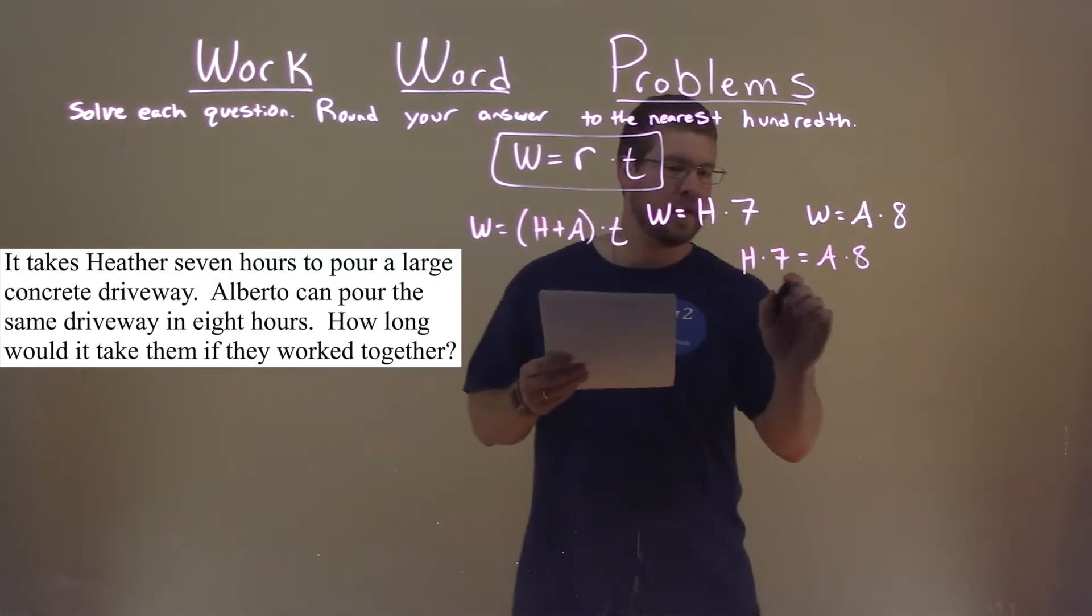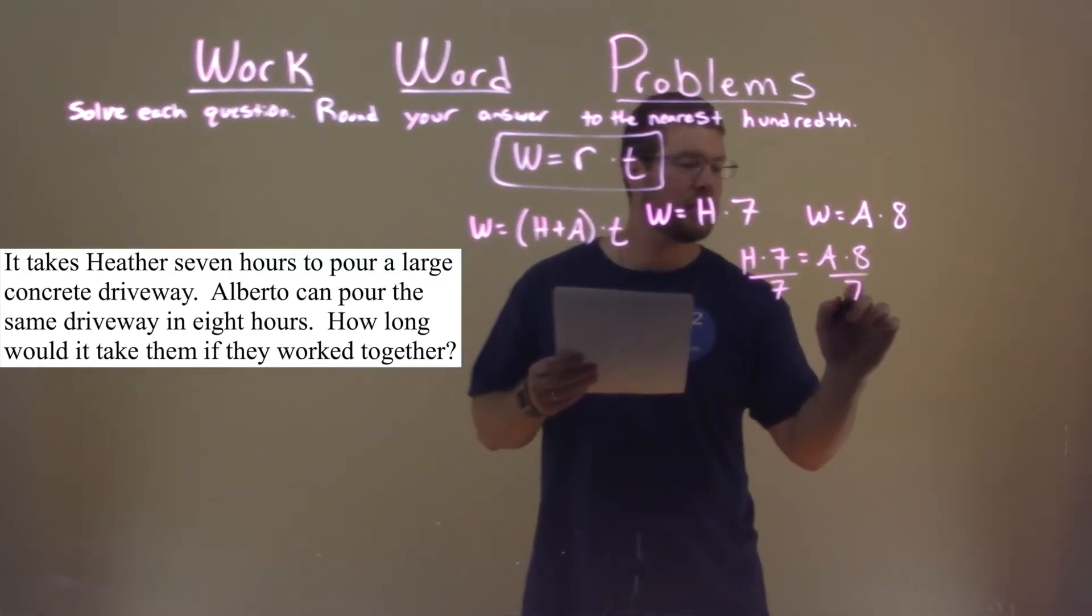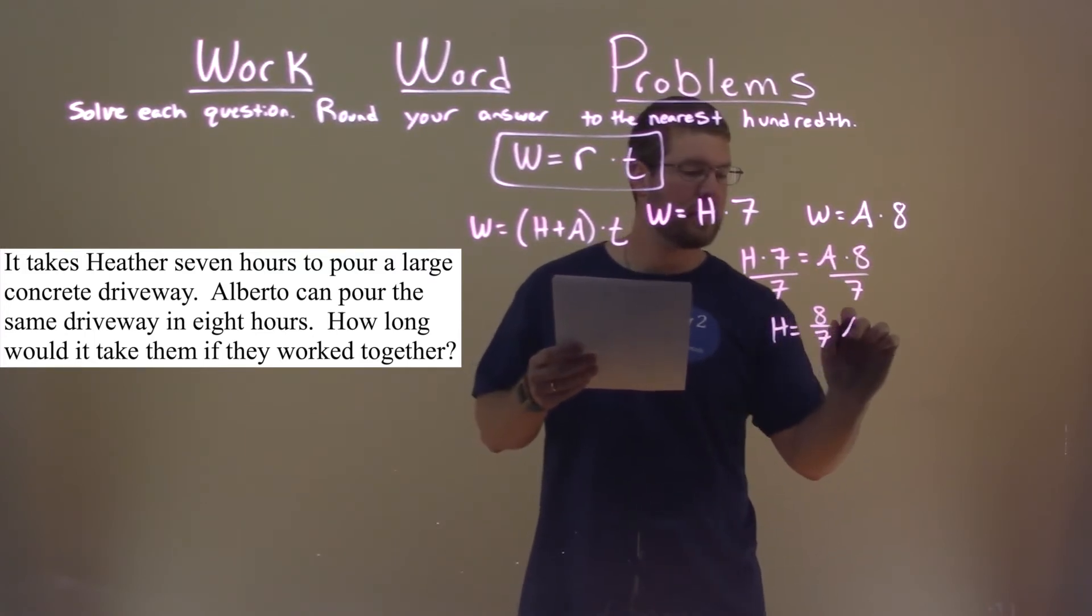And now we're going to solve for H. Divide by seven on both sides, and H equals, reorder this, eight-sevenths times A.